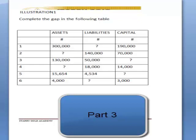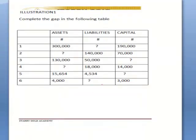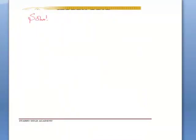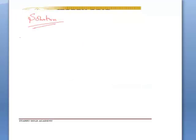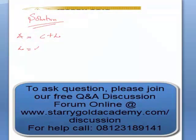Let's quickly solve this question. In question number one, we'll be looking at liabilities. The rule is that at any point in time, the asset of the business will be equal to the summation of capital and liability. So if we're looking at liability, our equation would change to be L equals A minus C.